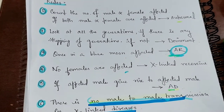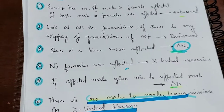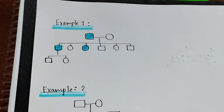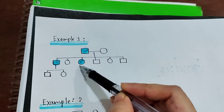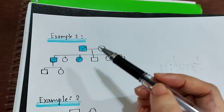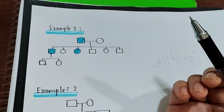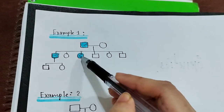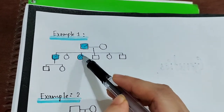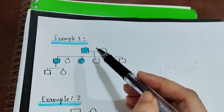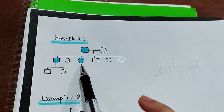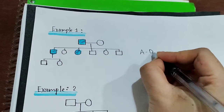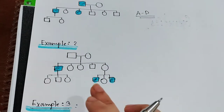Let's look at some examples. In the first example, we see two generations being affected — generation one and generation two. Both males and females are affected. Since multiple generations are affected and both sexes are involved, it is likely to be autosomal dominant.